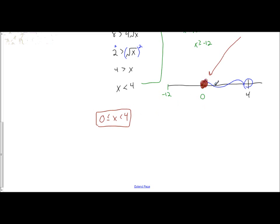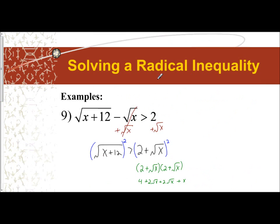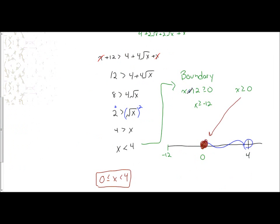We can see that with the graph: 0 is included and the solution is between 0 and 4. So 0 is less than or equal to x, which is less than 4. We have to be careful when solving radical inequalities — we need to check for a boundary, which exists where the expression inside the radical is set greater than or equal to zero and solved, and we must confirm whether it affects our final answer.